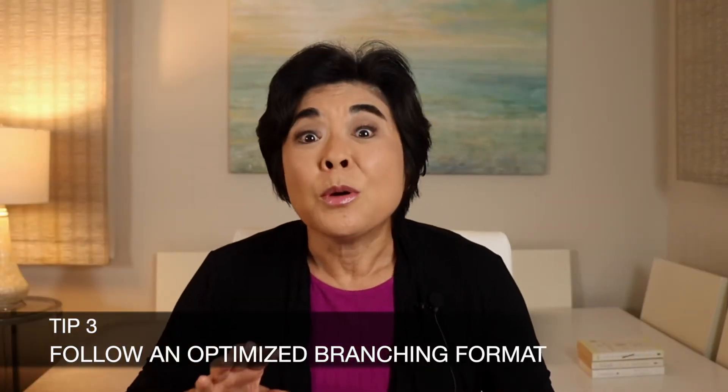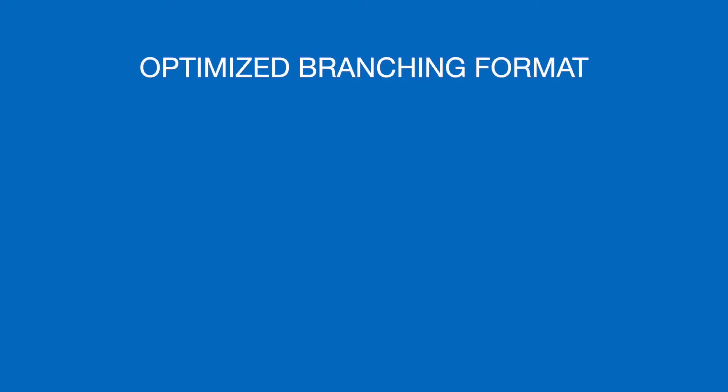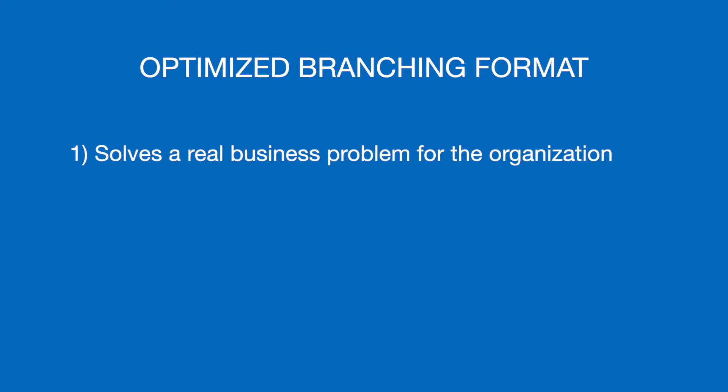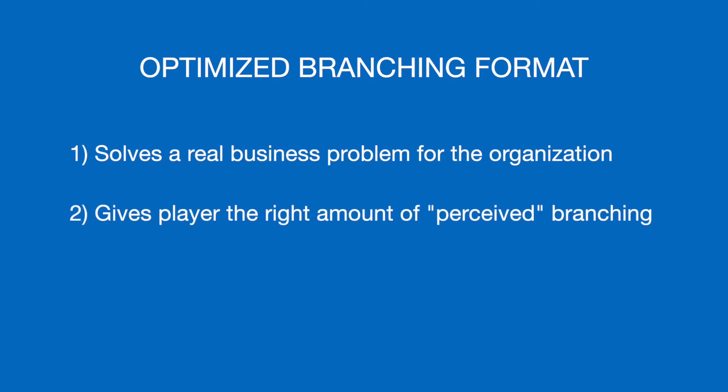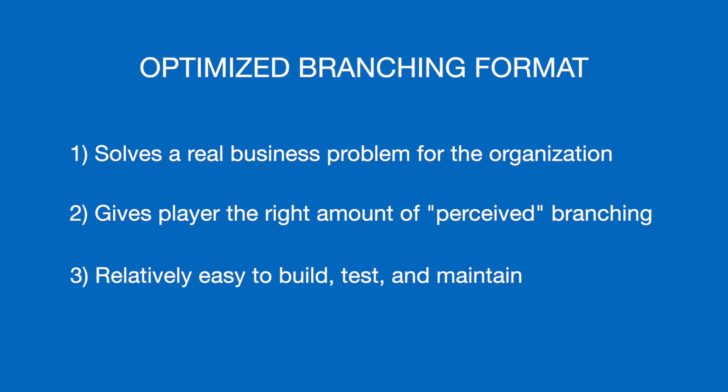Tip number three: follow an optimized branching format. There are so many possible branching structures that it can become overwhelming, so instead of reinventing the wheel each time, consider using an optimized branching format — one that achieves three things: it solves a real business problem, it gives the user just the right amount of perceived branching, and it's relatively easy to build, test, and maintain. Since every organization has different business needs, there will be a wide variety of optimized branching formats.